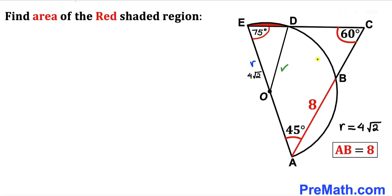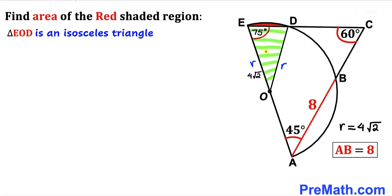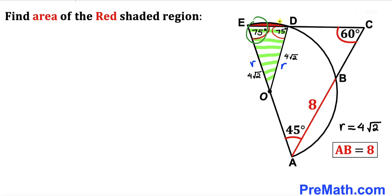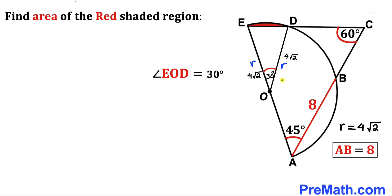Triangle EOD is isosceles since OE equals OD, both being radius r equal to 4√2. Since both sides are congruent, the base angles are equal, so angle OED equals 75 degrees as well. The angle at O in triangle EOD is therefore 180 minus 75 minus 75 equals 30 degrees. So angle EOD equals 30 degrees.